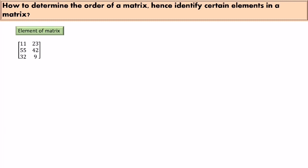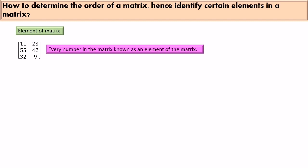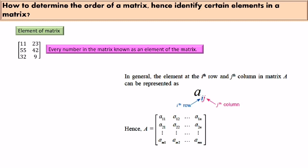Now, what is an element of a matrix? Every number in a matrix is known as an element. In general, the element at the i-th row and j-th column in matrix A is represented as a_ij, where i is the row and j is the column. For example, a_11 is the element at the first row and first column, and a_12 is the element at the first row and second column.